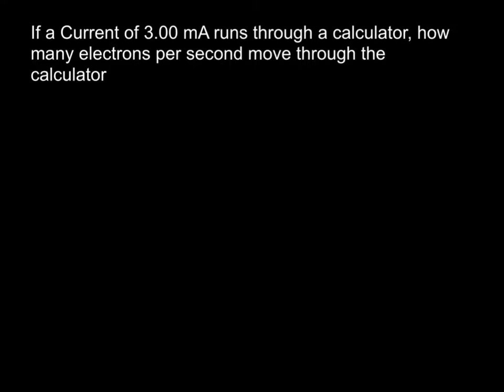So if a current of three milliamps runs through a calculator, we want to know how many electrons per second move through the calculator. So start with our definition of current, that current is change in Q over T, our change in charge over time.